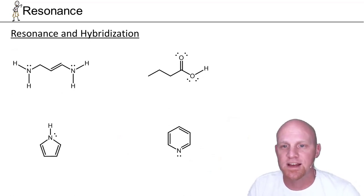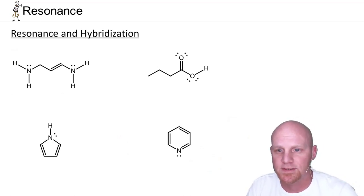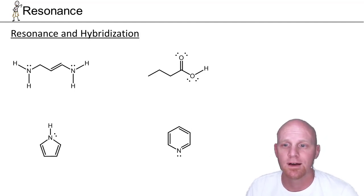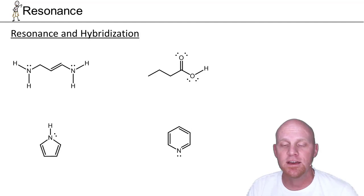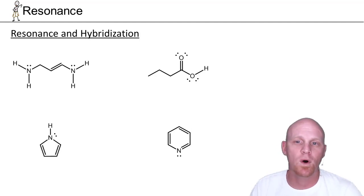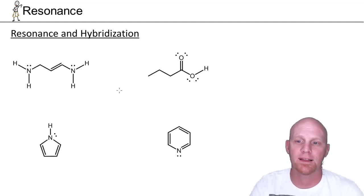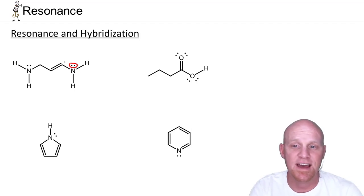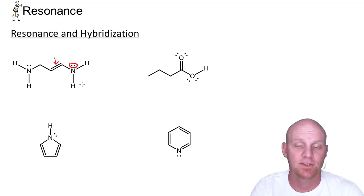Let's take a look at some examples of where resonance is going to impact hybridization. We're going to be talking about atoms that have lone pairs of electrons. A lone pair of electrons can be stabilized by resonance if it is exactly one bond away from pi electrons. So if we look at this structure right here, this lone pair is exactly one bond away from these pi electrons, and is going to be involved in resonance — we can move the lone pair into a pi bond and the pi bond into a lone pair.